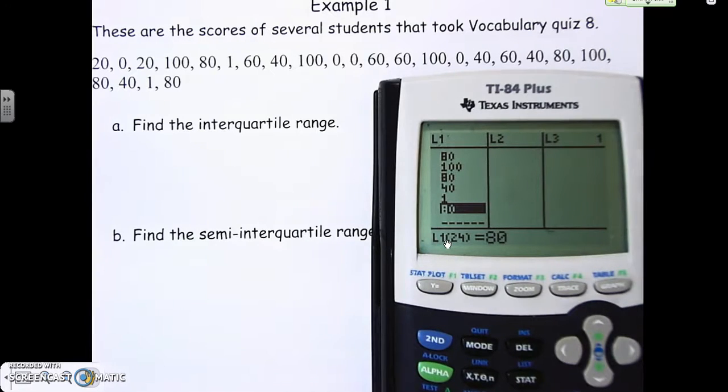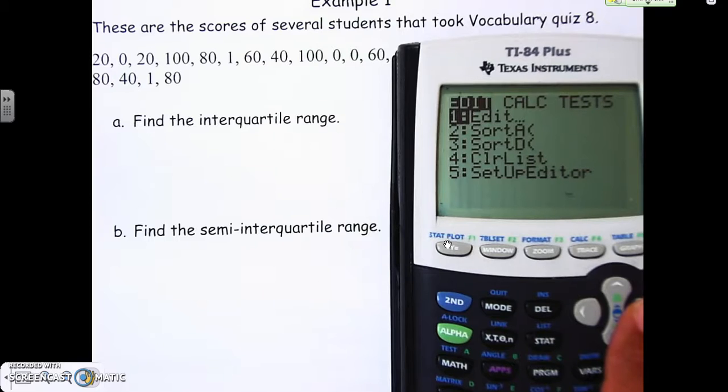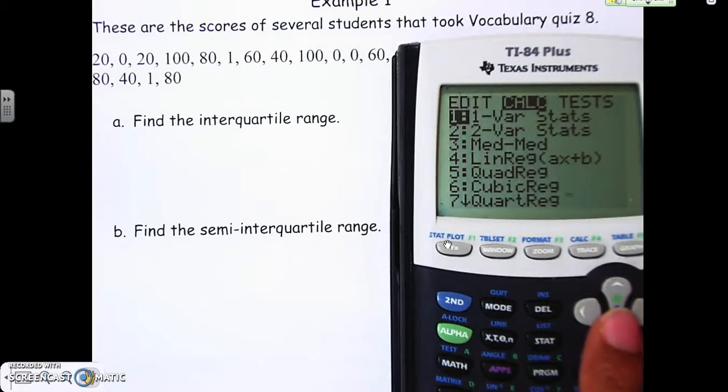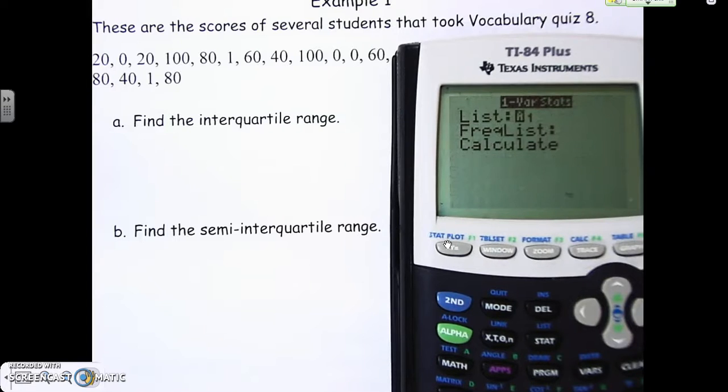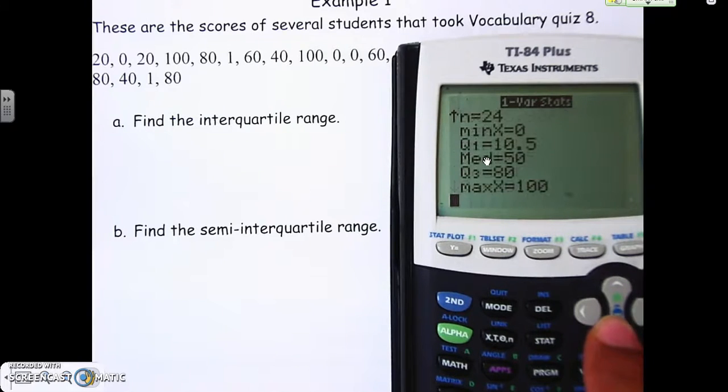Once we do that, we're going to hit stat again, go to the right, and hit calc number one. We're not going to worry about frequency list, we're just going to go down and hit calculate. It gave us a bunch of things here. Remember, X with a line over it means we're talking about the mean. That's the summation sign, that's standard deviation we'll talk about later, and n tells you how many numbers you have.